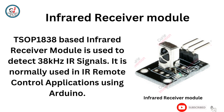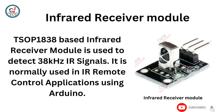Infrared Receiver Module. The TSOP-1838 based Infrared Receiver Module is used to detect 38 kHz IR signals. It is normally used in IR remote control applications using Arduino.